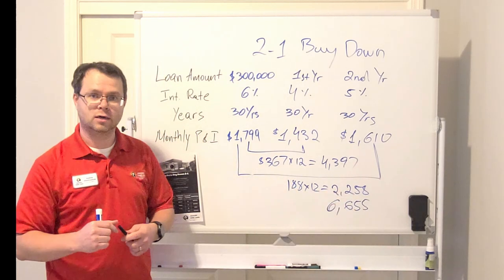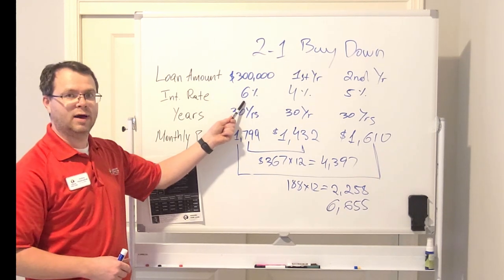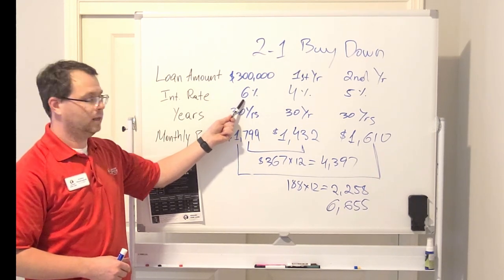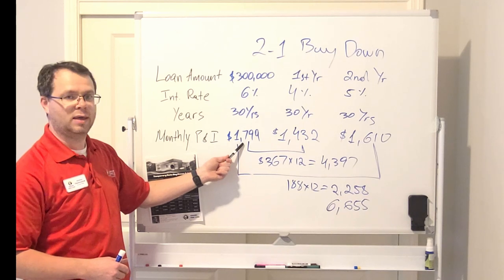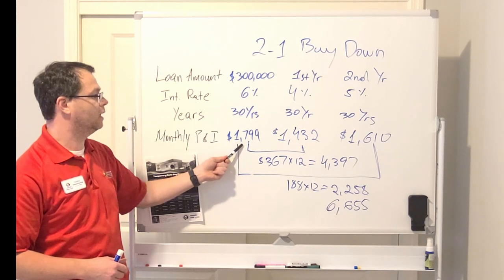And then for the third year, you are going to go back to your qualifying rate of 6%, and now you are going to start making payment of $1,799 every month.